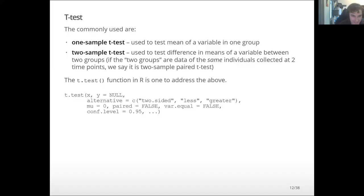Now we're getting into t-tests. There are two ways they're most frequently used. First, if you have one variable and you think its mean equals something, you can test whether it is or not given a bunch of observations. Second, if you want to test two variables to see if their means are equal or if the difference equals something, you run a two-sample t-test. If the groups have paired individuals — like the same person in both groups, or maybe twins — you could use a paired t-test. The function in R is t.test.